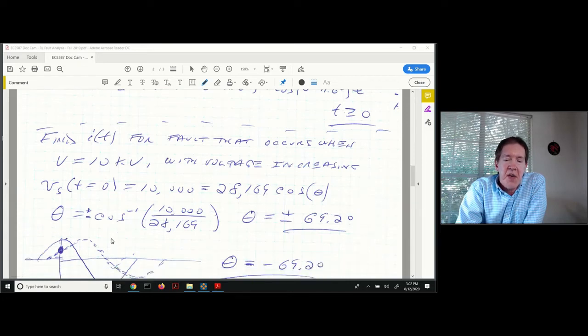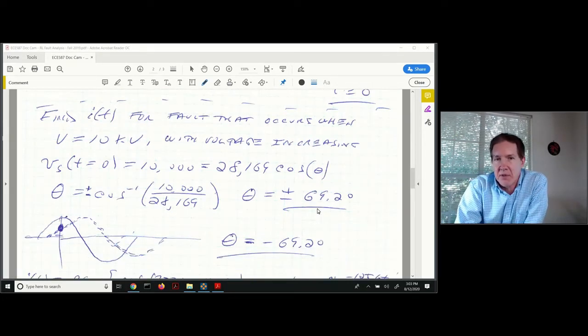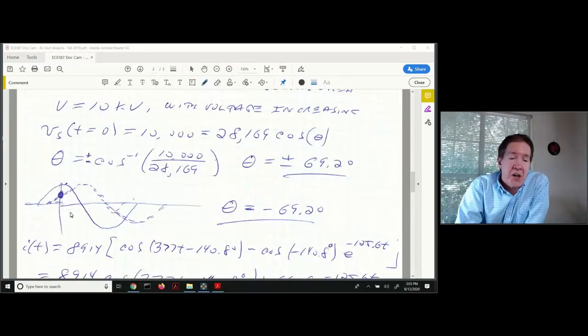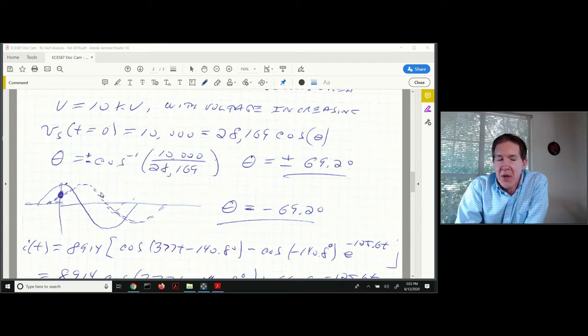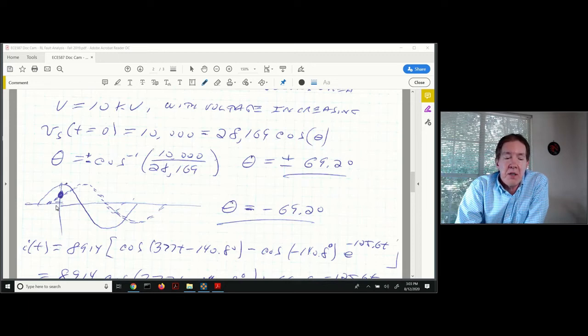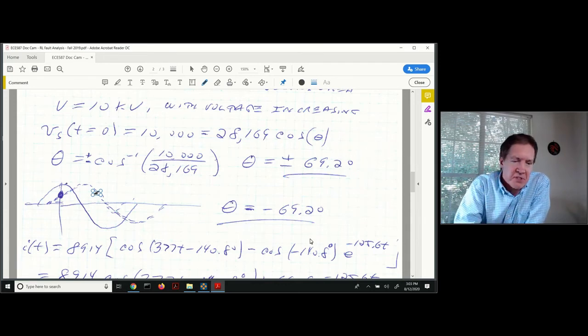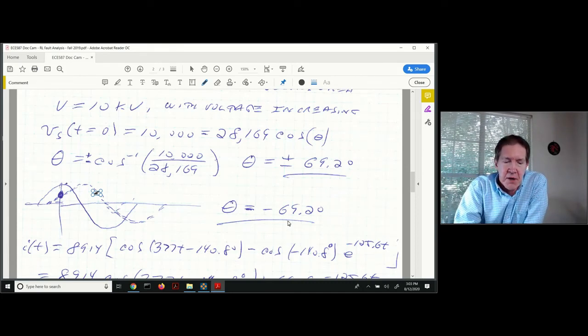When you solve for theta, theta actually has two solutions, plus or minus that angle. We have to make sure we choose that angle such that not only does the magnitude match up, but we know we're on the increasing part of the waveform instead of the decreasing part. That's going to occur when theta equals minus 69.2 degrees. A lot of times it helps to sketch that out to make sure you're choosing the right value.